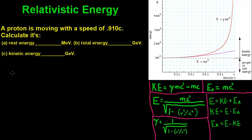Hi guys, today we're talking about relativistic energy. In this problem we've got a proton moving at a speed of 0.910c, the speed of light. We need to calculate its rest energy, total energy, and kinetic energy in mega electron volts and giga electron volts. I put a graph over here to show basically what it's going to look like.